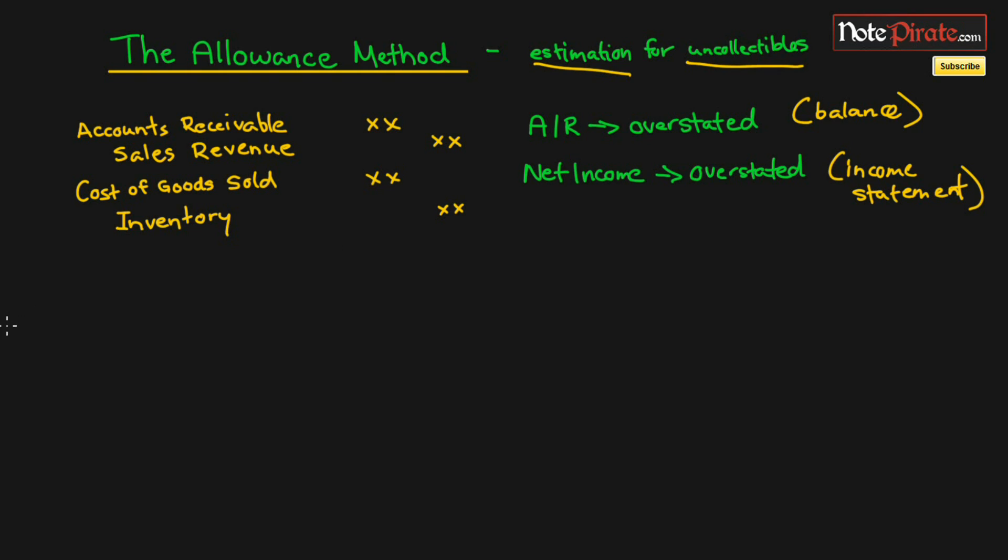The account that is going to bring net income down to its real value is known as bad debts expense. When we debit an expense, this increases our bad debts expense, which brings net income back down. When we debit it for a certain amount, it will bring it from an overstated value to its actual value. We know expenses lower net income.